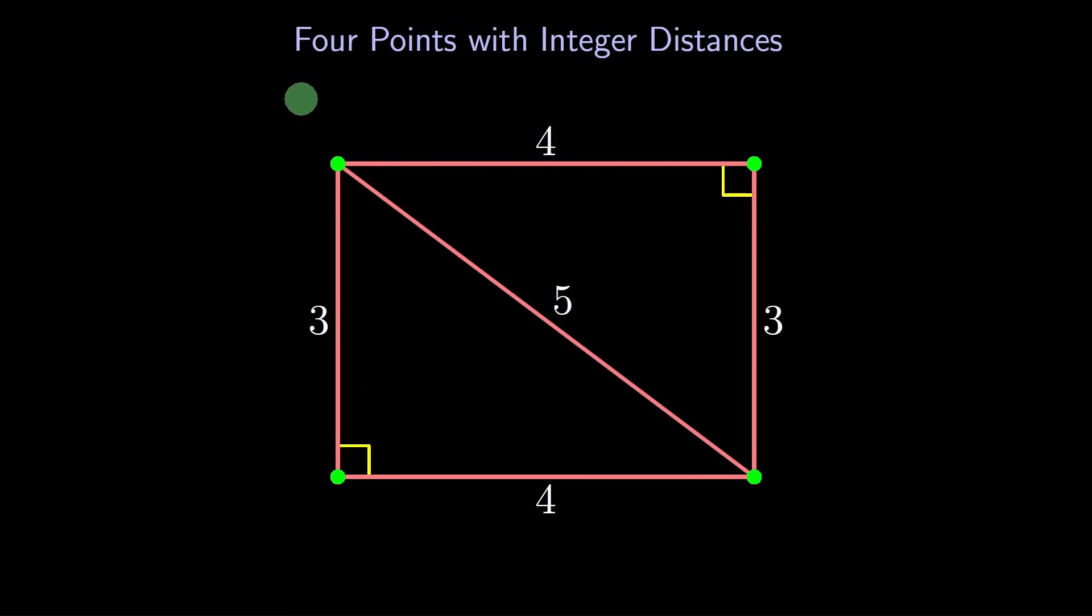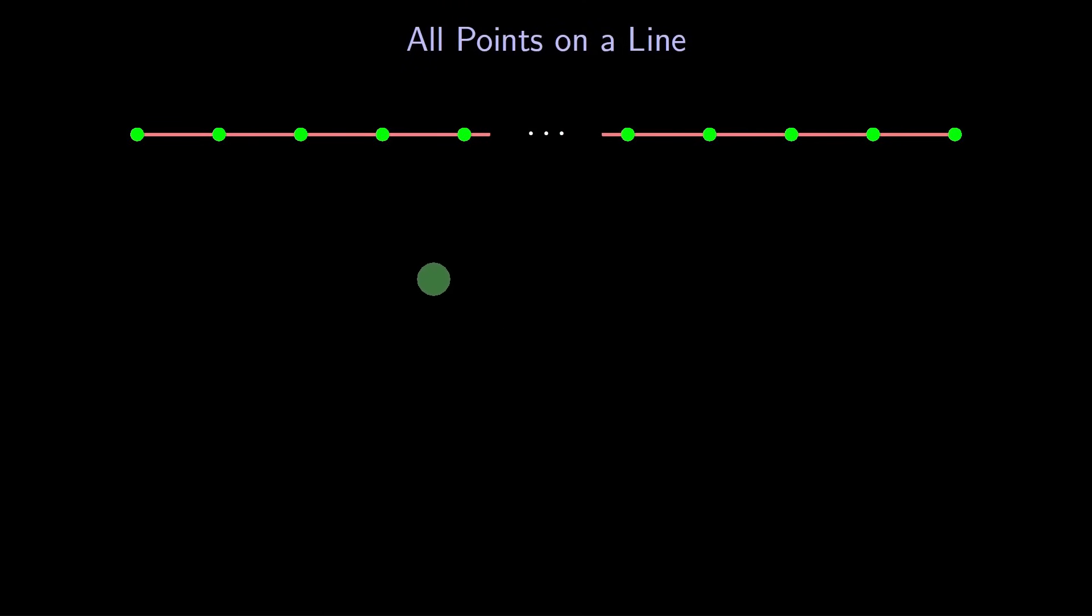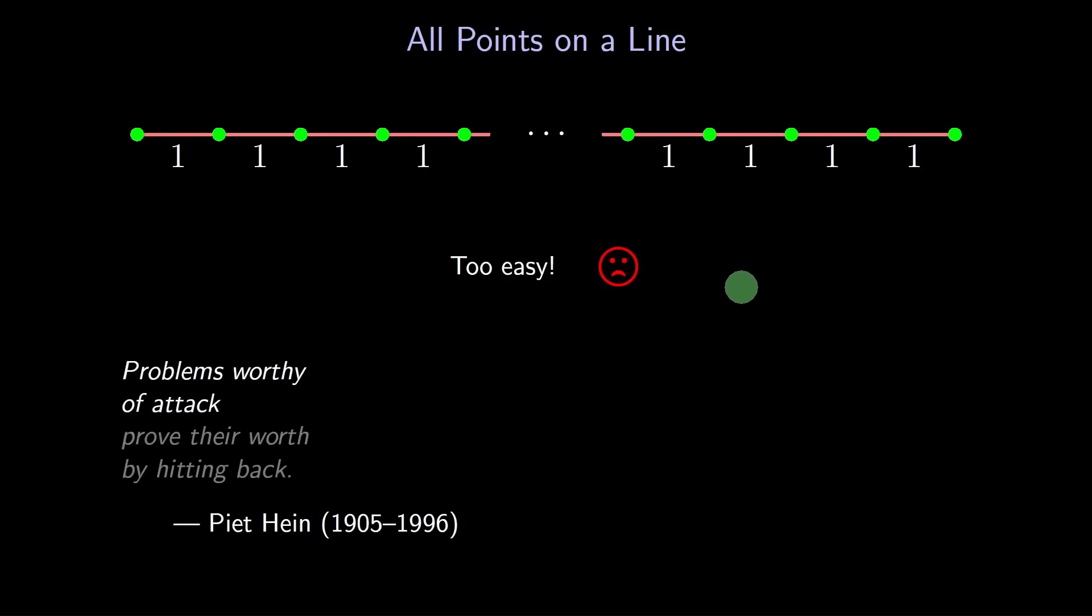We've done three points and four points. Let's jump to 100 points. Can you find 100 points in the plane so that every distance is an integer? Yes. We could place all 100 points on a line. We can make the distance between consecutive points be one. Then every distance, even between far away points, is a whole number. That's the answer, but it feels too easy. For mathematicians, that's a bad thing. We believe that problems worthy of attack prove their worth by hitting back. What made this question easy? We were allowed to place all the points on the same line. What if we forbid that choice?